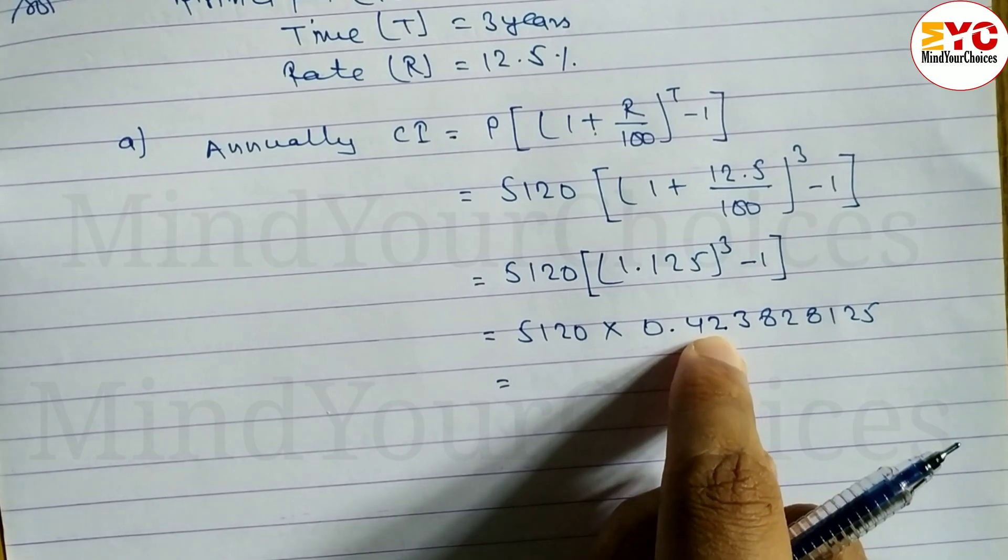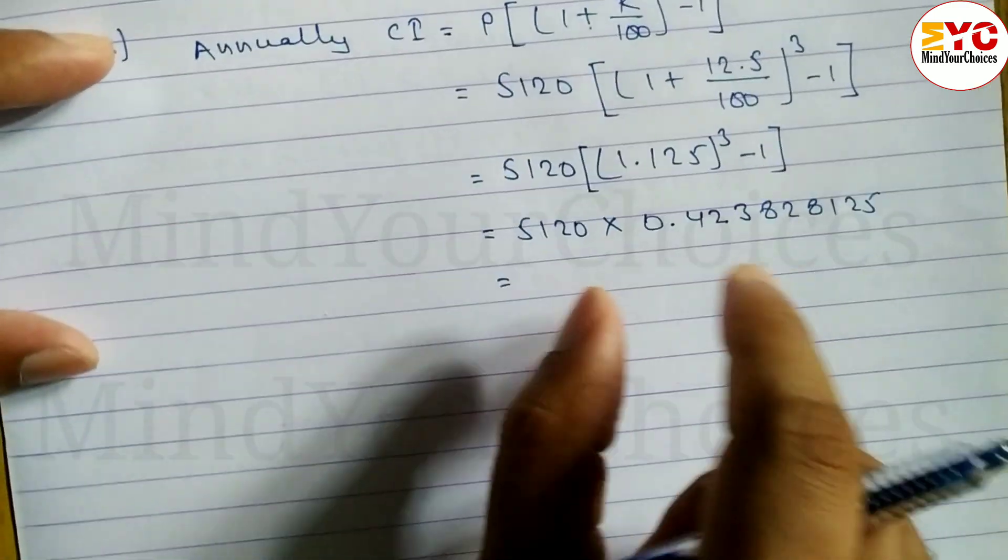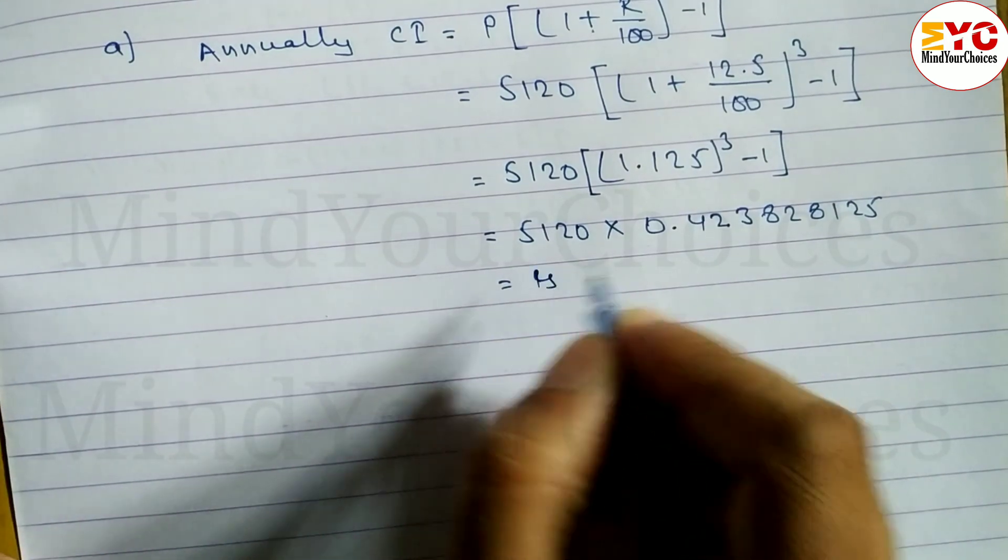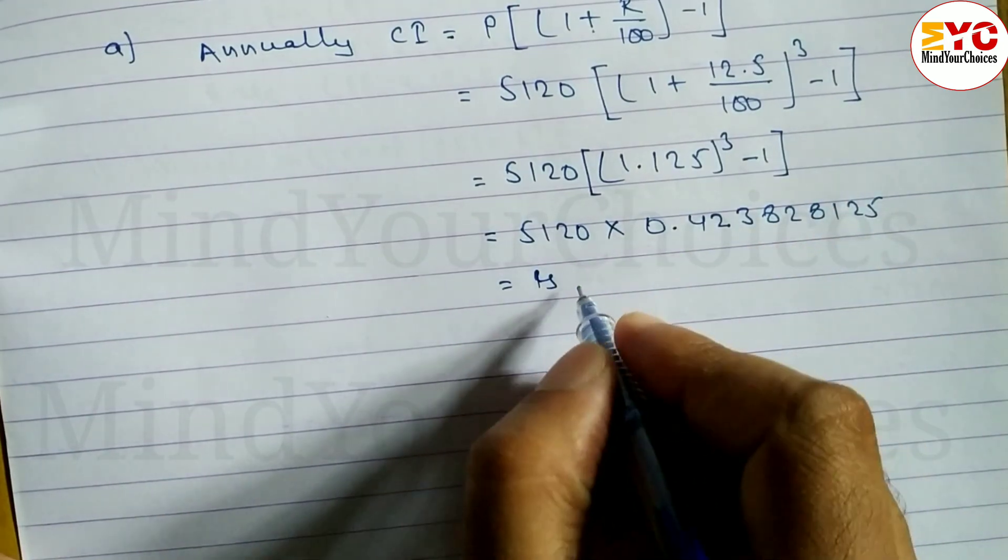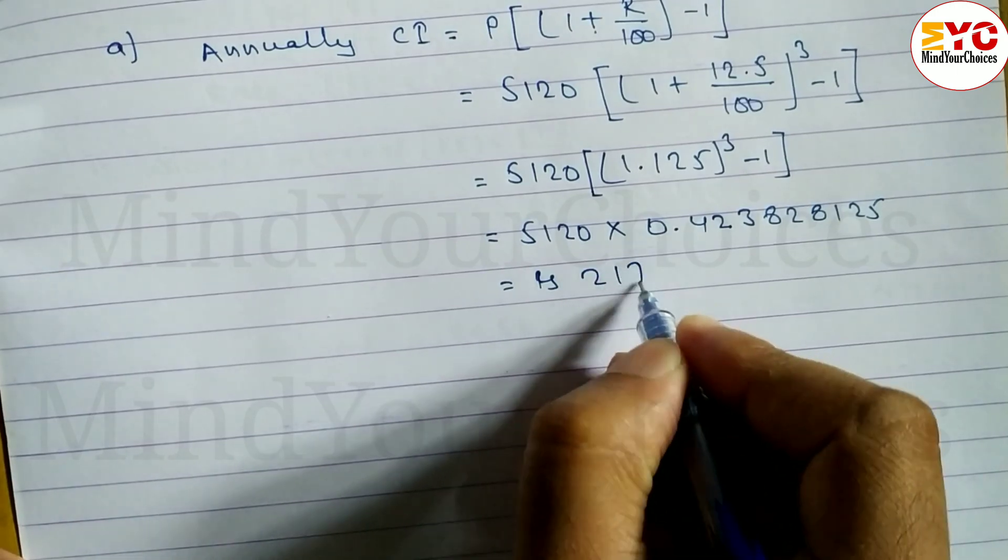After the decimal, we will write the exact answer. The answer is, after removing all decimals, the annual compound interest is Rs. 2,170.